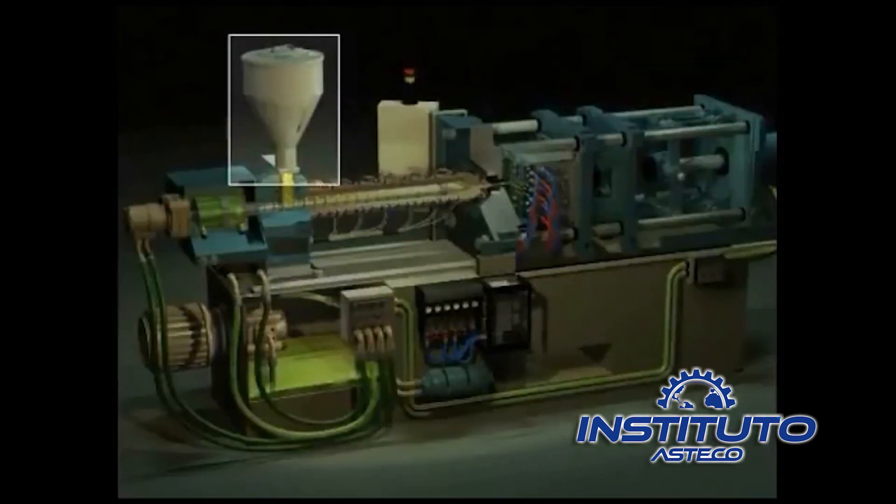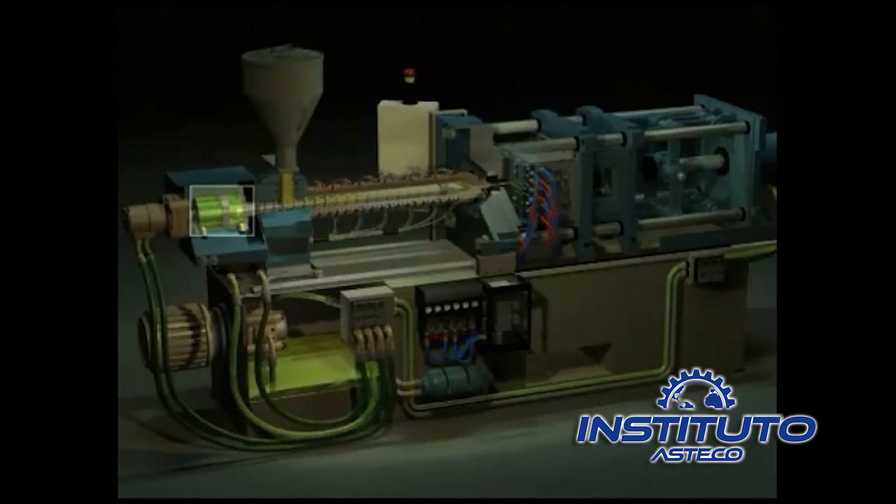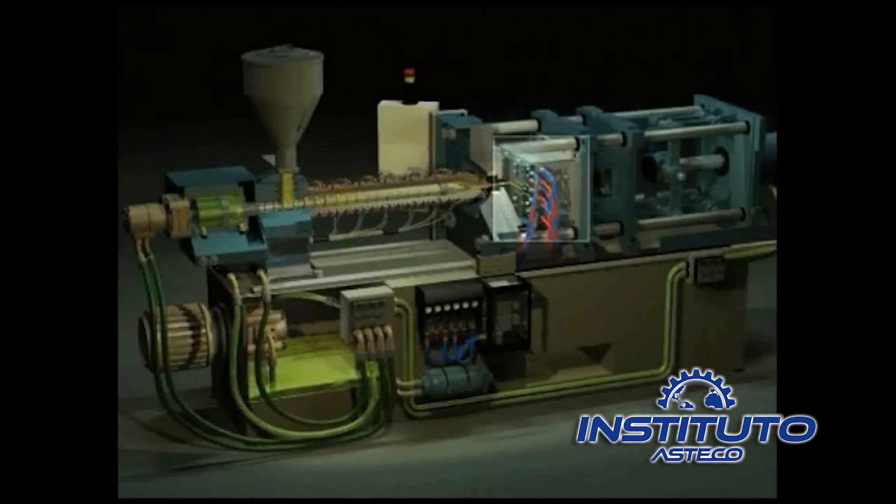Again, this is the hopper. This is the hydraulic injection cylinder. Here is the screw drive motor, the barrel, the nozzle, the platens, the mold and the clamp.